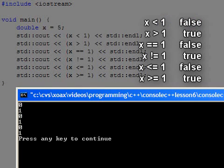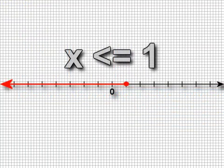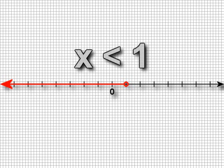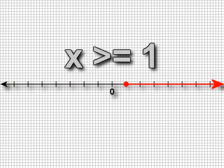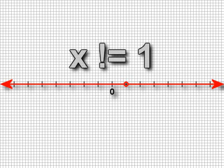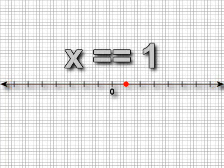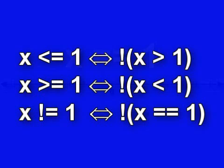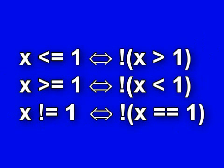We can represent the set of x values for which each expression is true on the number line. Notice that there is some redundancy since half of the operators are equal to the negation of the other operators.